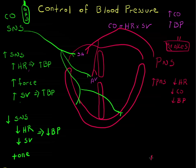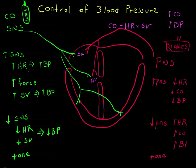The parasympathetic nervous system also has a tone — there's a constant signal going to the heart. It's like driving with your brakes on: if you want to slow down you push on the brake, and if you want to speed up you take your foot off the brake. Similarly, a decrease in the parasympathetic nervous system signal to the heart would increase the heart rate, increase cardiac output, and increase blood pressure.